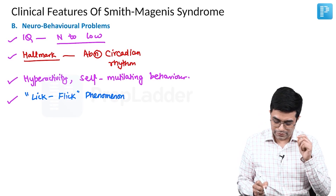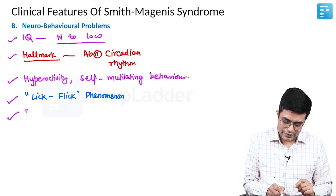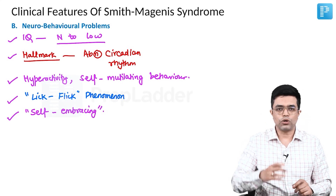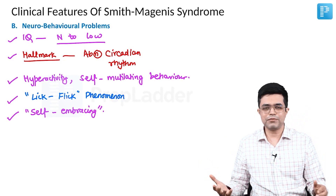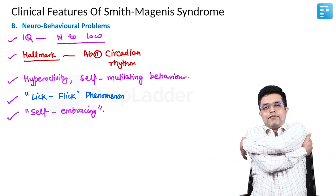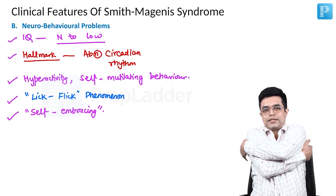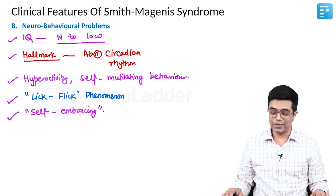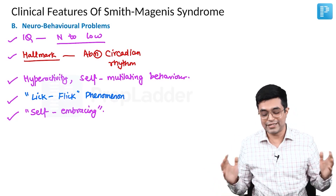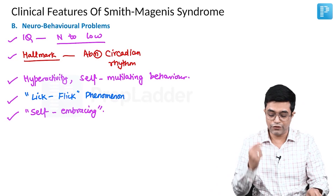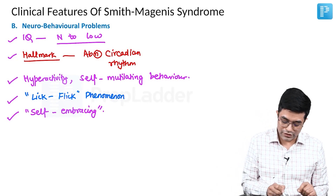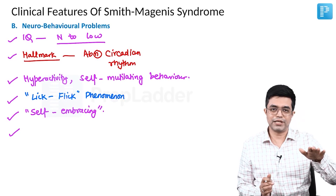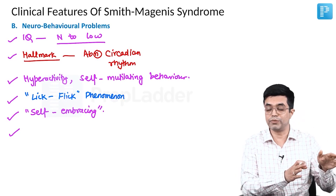Another abnormal behavior is self-embracing. While in public or sometimes doing nothing, these patients will simply sit and embrace themselves. Despite their IQ being in the normal to slightly lower range, they are not frankly mentally retarded — in fact, mental retardation is rare in Smith-Magnese syndrome.